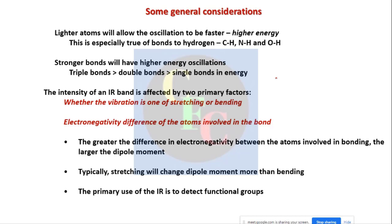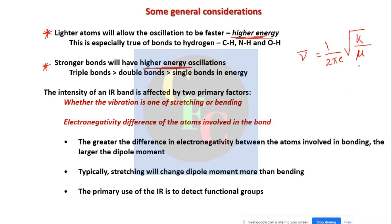Before analyzing spectra for real molecules, we consider some general points. Lighter atoms allow oscillation to be faster — higher energy. Stronger bonds have higher energy of oscillations. Both of these can be directly related from the relation: wavenumber = (1/2πc) × √(k/μ), where μ is the reduced mass equal to m₁m₂/(m₁+m₂).